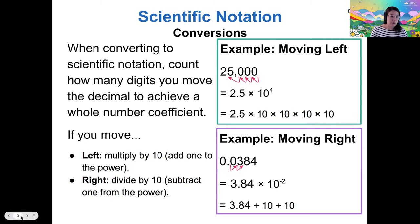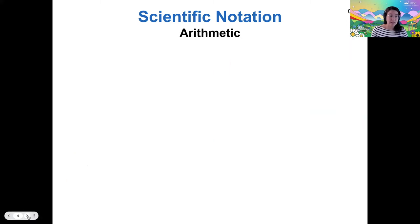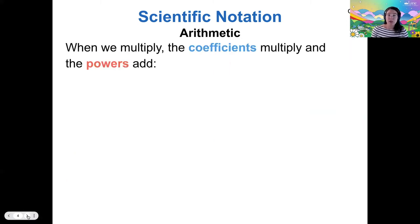Now let's talk about calculations in scientific notation. So if I want to multiply numbers in scientific notation, I multiply the coefficients, but then I add the powers. So as an example, if I have 2 times 10 to the 3, and I multiply that by 3 times 10 to the second power,